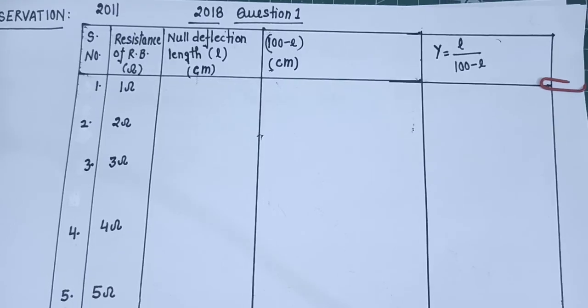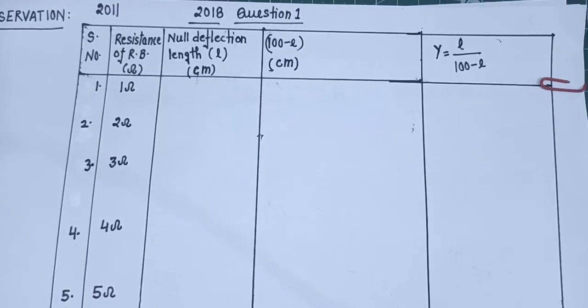Draw the observation table and get ready with your pencil. Perform the experiment along with me, which I will show you in the next video — I am going to connect the circuit and perform this experiment.